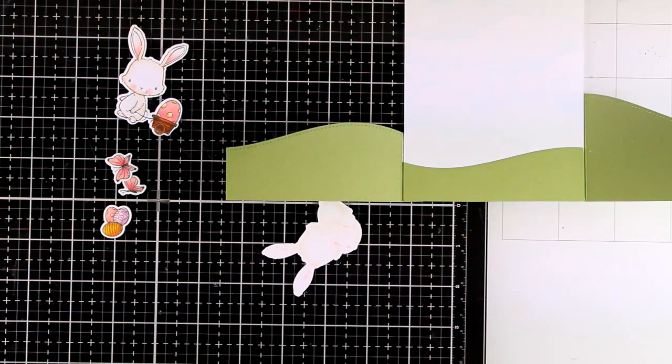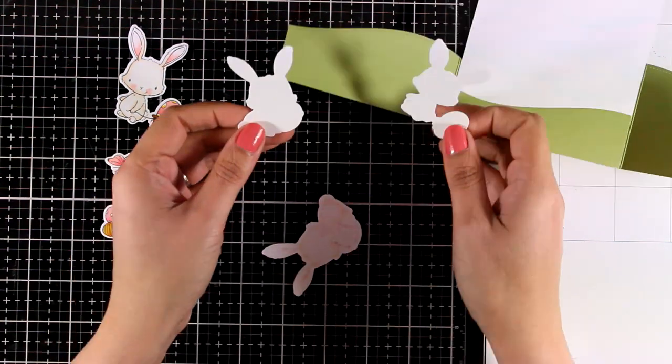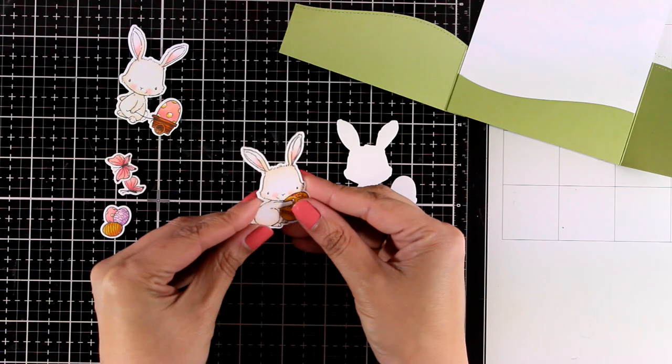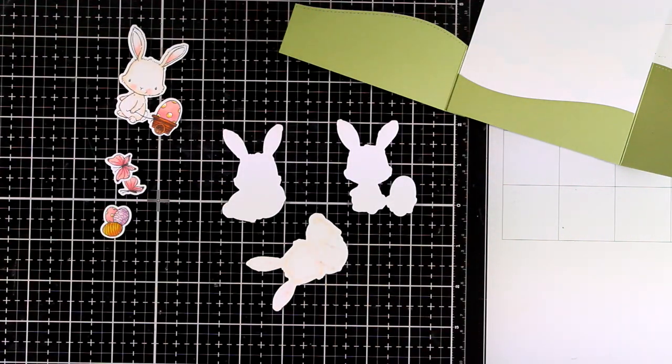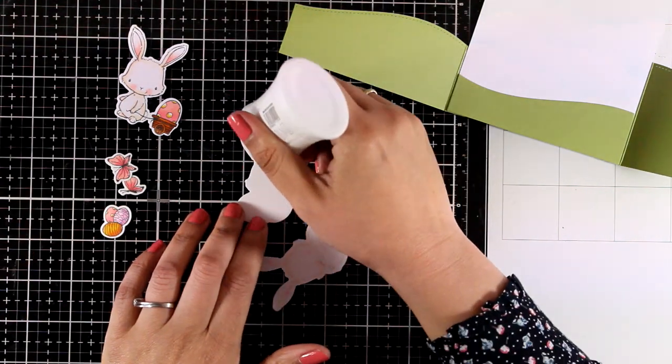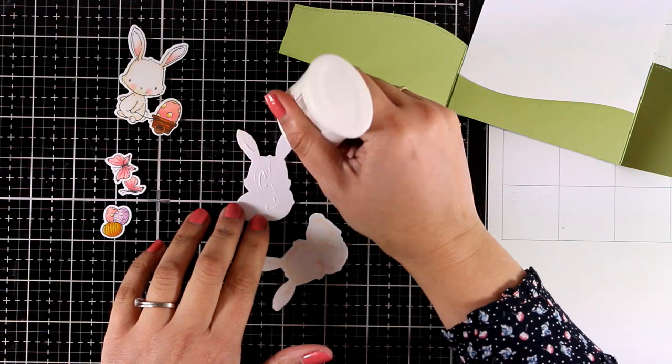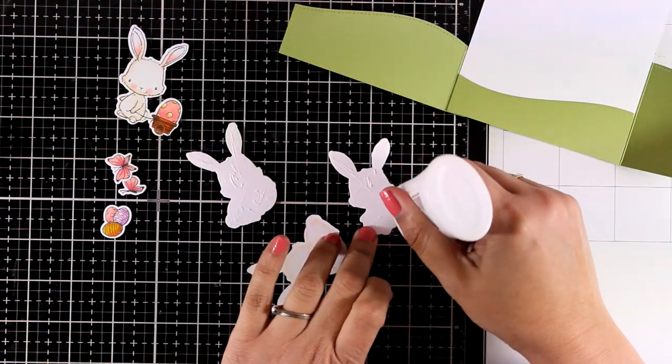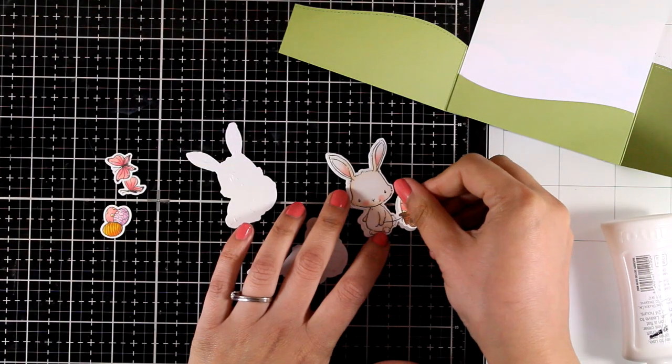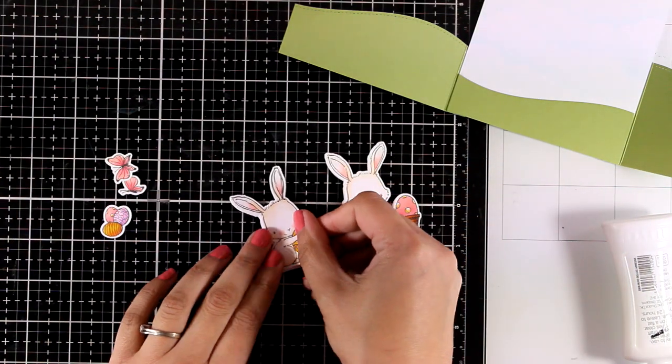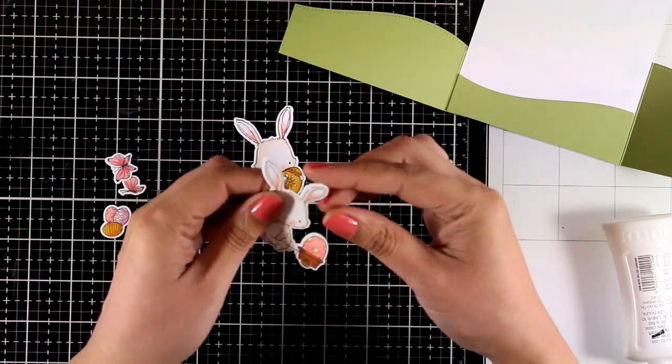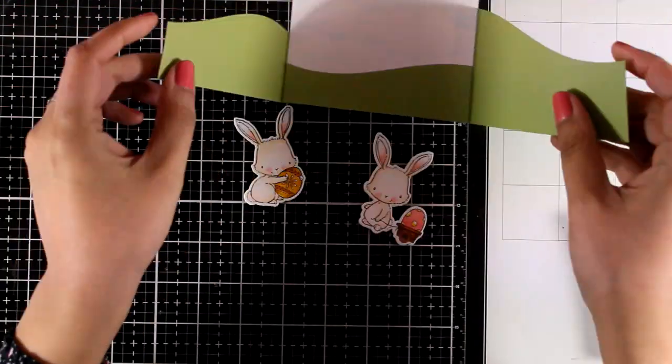However, the back of those colored images bothers me since the ink bled through. I used the Neenah Solar White cardstock which is the 80 pounds, so I'm going to cut out two more images of those bunnies and I'm going to stick them at the back. This way I have a nice and clean backing for sticking them down. I'm using Nuvo Deluxe—this is liquid glue which allows me to slide them until I have the perfect fitting.